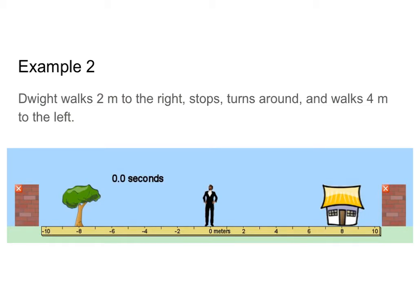So let's try another example. In this one we have Dwight, who's gonna walk 2 meters to the right, stop, turn around, and next walk 4 meters to the left. So let's draw those vectors into our picture. So we have Dwight starting at 0, and he's gonna walk 2 meters to the right. And so there's my first vector. I've got my head and my tail of my vector.